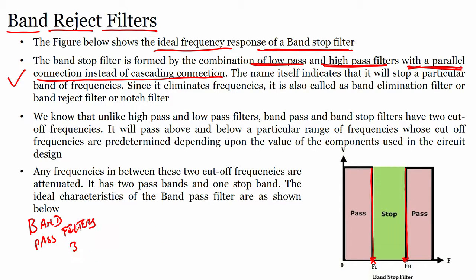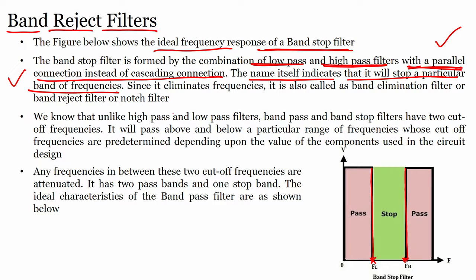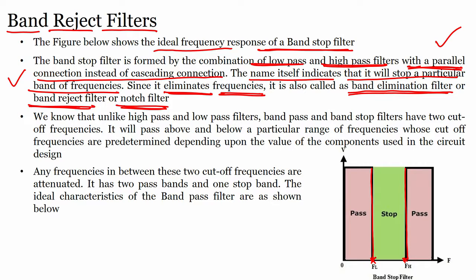Just converting high pass to low pass and low pass to high pass is not enough for band reject — you also have to understand the parallel connection. The name itself indicates it will stop a particular band of frequencies. Since it eliminates unwanted frequencies, it is also called a band elimination filter, band reject filter, or notch filter.